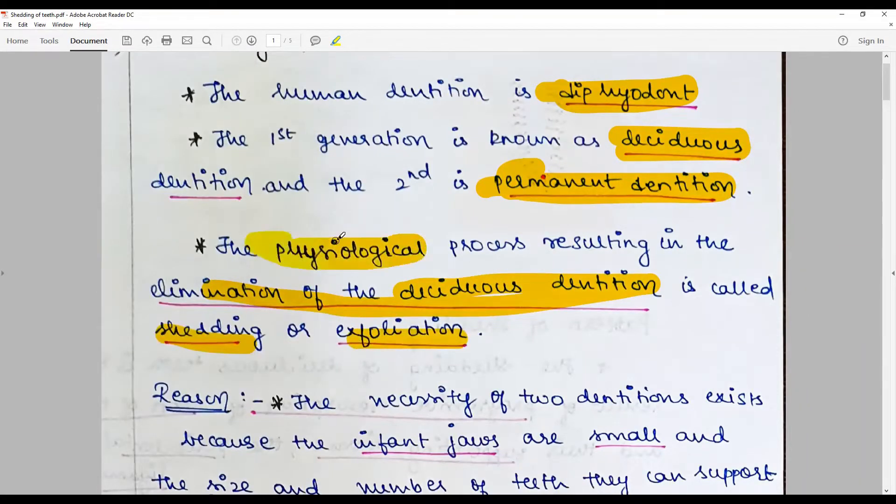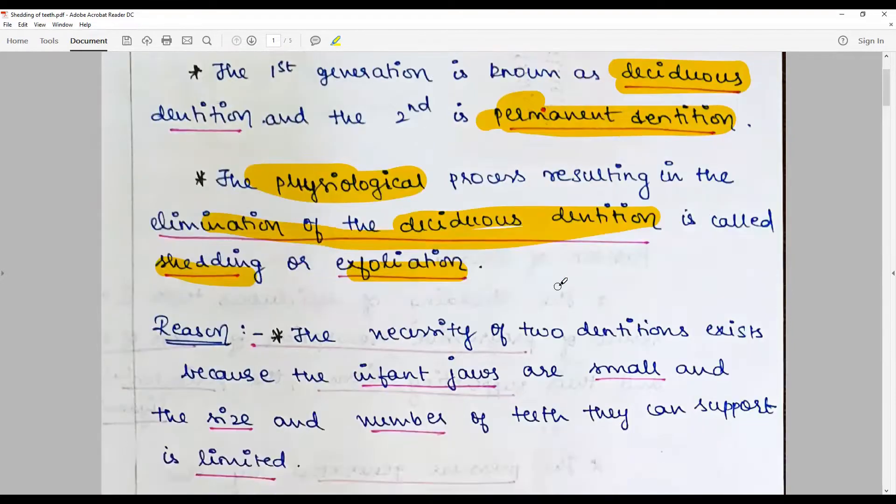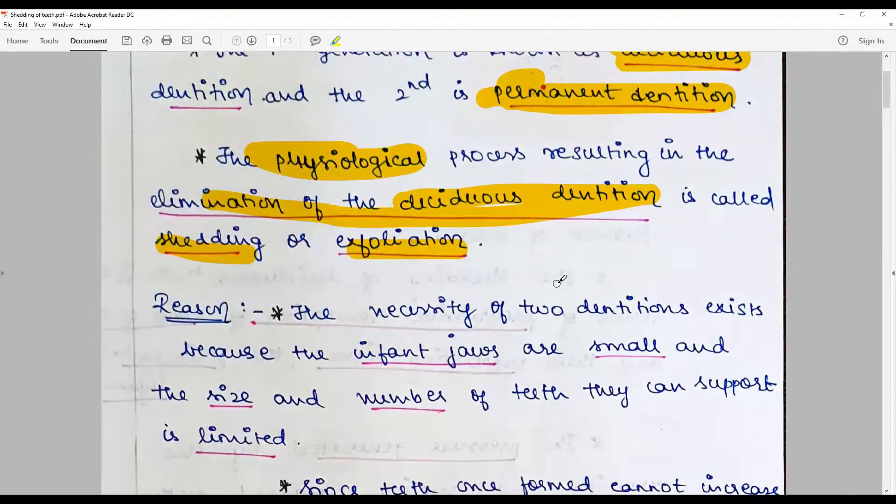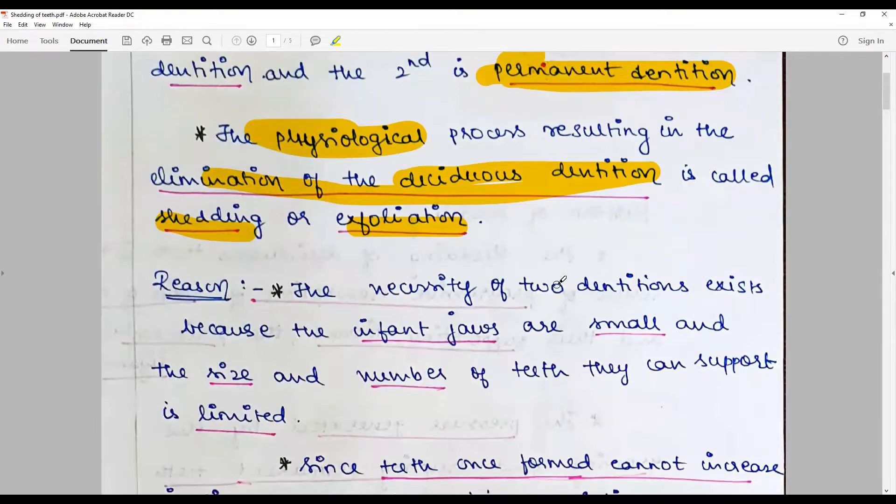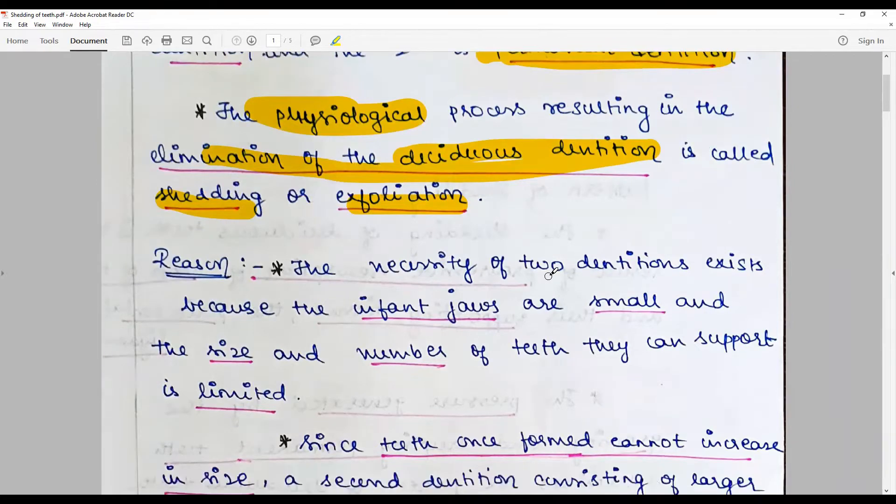It's a physiological, not a pathological process. The reason humans require two dentitions is because infant jaws are small. Most of our growth occurs outside the uterus, and the size and number of teeth in infancy is very limited.